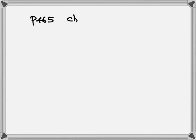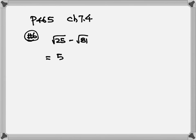Page 465, section 7.4, number 6. We have square root of 25 minus square root of 81. If you use your calculator, square root of 25 gives you 5, minus square root of 81 that's 9. So you have 5 minus 9, so the answer is negative 4.